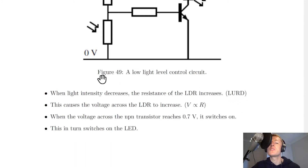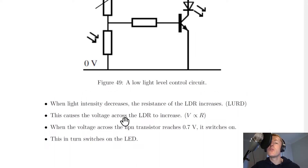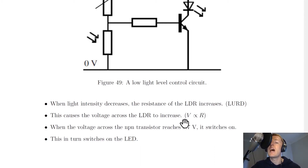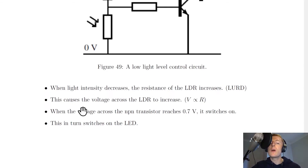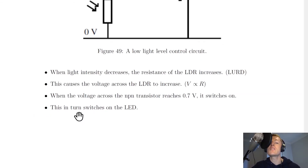This causes the voltage across the LDR to increase. Remember, V is proportional to R, so whatever happens to the resistance happens to the voltage as well. Because the resistance of the LDR is increasing, the voltage across the LDR increases. When the voltage across the NPN transistor reaches 0.7 volts, it switches on, which in turn switches on the LED.